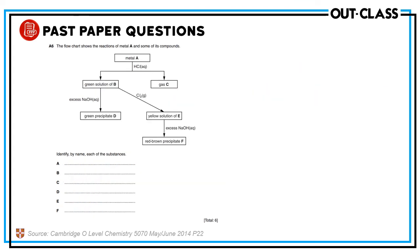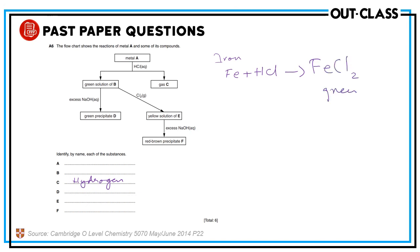Another question: metal A reacts with hydrochloric acid, giving a green solution and gas C. Metal plus acid can only give hydrogen gas, so gas C is hydrogen — confirmed. A green solution B indicates iron(II) salts, as iron(II) salts are green. So metal A is iron: iron plus HCl gives iron(II) chloride — the green solution — plus hydrogen gas.